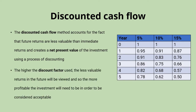Discounted cash flow works by using a discount factor to value any expected future returns in terms of what they would be worth today. And the higher the discount factor used, the less valuable the returns in the future will be viewed, and so the more profitable the investment will need to be in order to be considered acceptable.